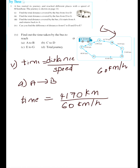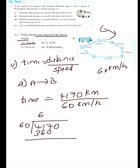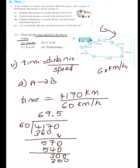You have to write the full sentence: time taken by the bus to reach A to B equals 4170 divided by 60. Dividing: 6, 360; 7, 5, 570; 9, 540; remainder 40, 30 — add a zero, put a decimal point, 5, 300. The answer is 69.5 hours.